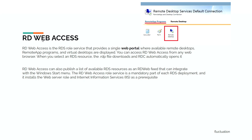The Web Access role provides a single web portal where you can see available remote desktops, RemoteApp programs, and VDI. You can access RD Web Access from any web browser. When you select an RDS resource, an RDP file downloads and RDC automatically opens it. RD Web Access can also publish a list of available RDS resources via an RD web feed that integrates with the Windows Start menu — so you can have all your applications right in the Start menu. The RD Web Access role service is mandatory and requires the Web Server role and IIS as a prerequisite.